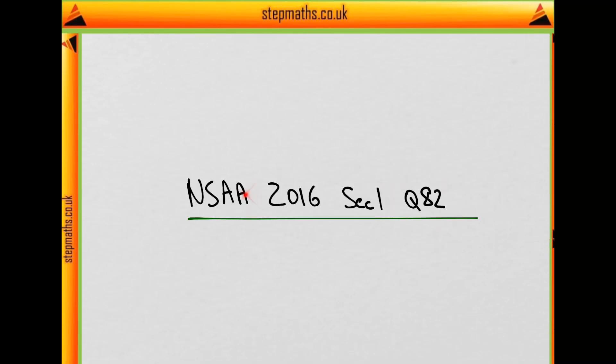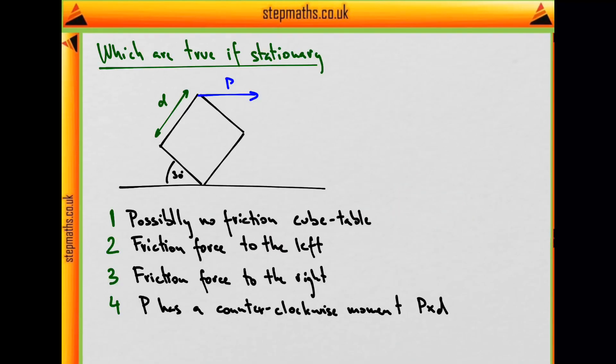This is question 82 from the 2016 exam. In this question we have a solid cube which rests with one of its edges on a table so that its side is at 30 degrees to the horizontal, side length D.